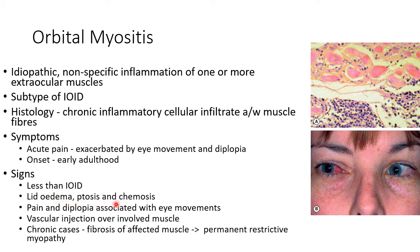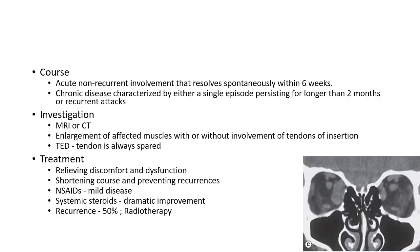Signs of orbital myositis include lymphedema, ptosis, and chemosis, with pain and diplopia associated with eye movements. There will be vascular injection over the involved muscle — for example, vascular injection over the right medial rectus. In chronic cases, fibrosis of the affected muscle can lead to permanent restrictive myopathy. Regarding course, there can be acute non-recurrent involvement that resolves spontaneously within six weeks, or chronic disease with either a single episode persisting for more than two months or recurrent attacks.